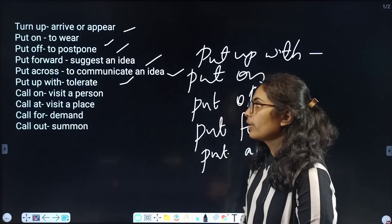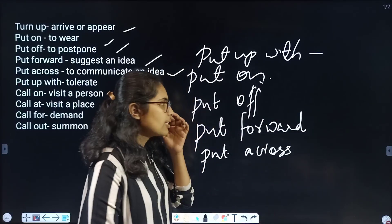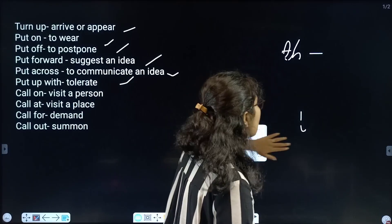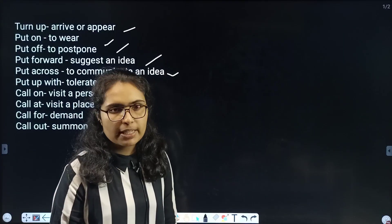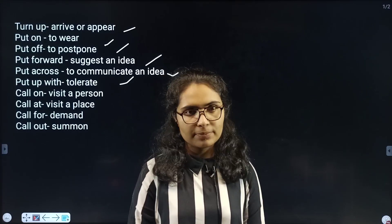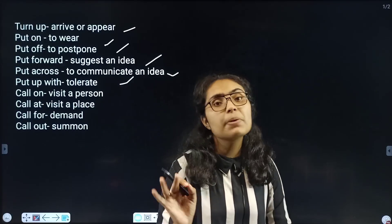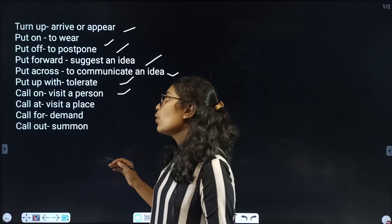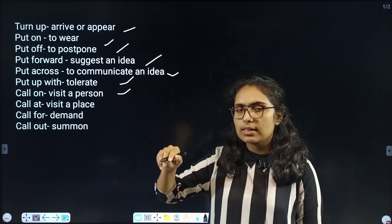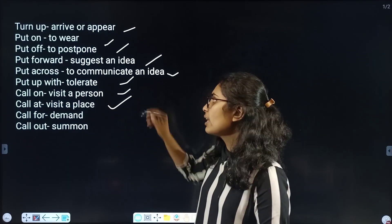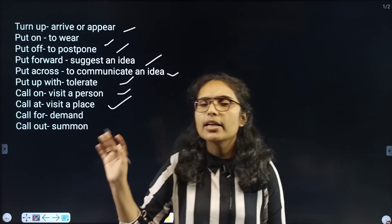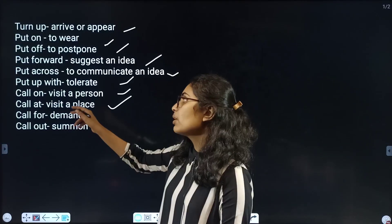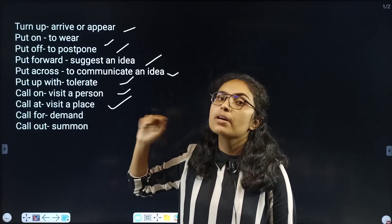Next: call on. I decided to call on a person. Call on means to visit a person. I desire to call on my brother. I desire to call on my friend. Then call at — call at means visiting a place. I call at a particular place. So, call on is visiting a person, and call at is visiting a place.